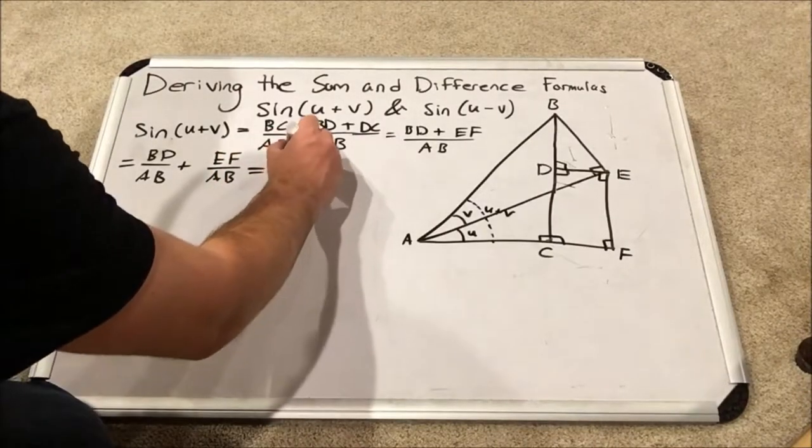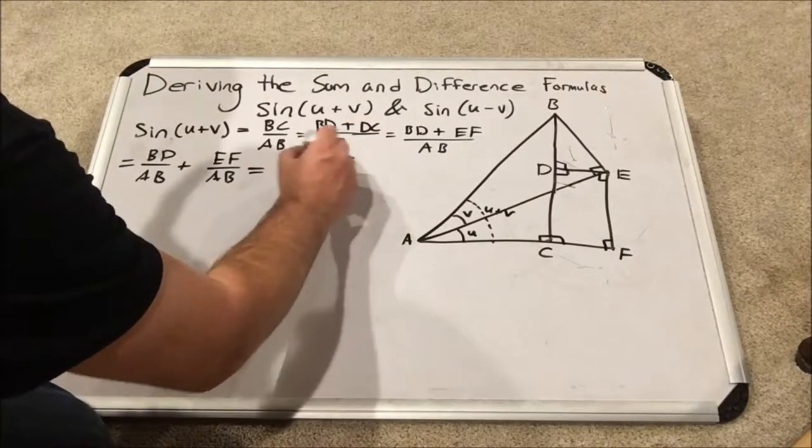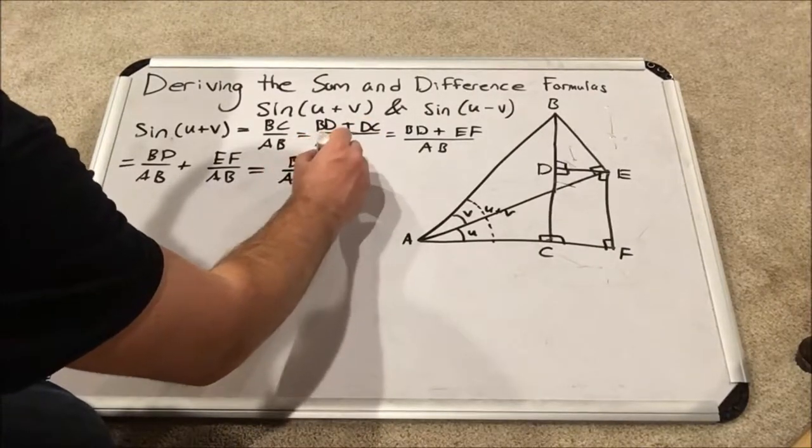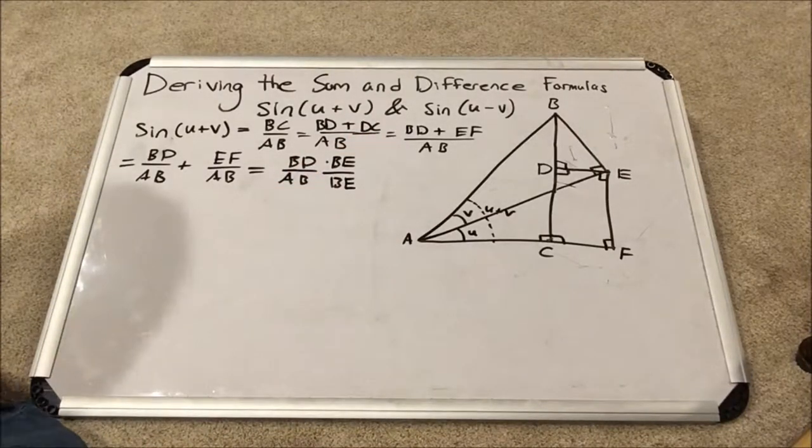And so BD times BE over AB times BE. This is perfectly rational and reasonable to do.